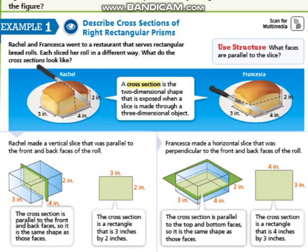We can say that a cross section is the two-dimensional shape that is exposed when a slice is made through a three-dimensional object. A very interesting example is a cake or bread and you have a knife and you cut. What is the shape that you are going to see? I can cut either horizontally or vertically.